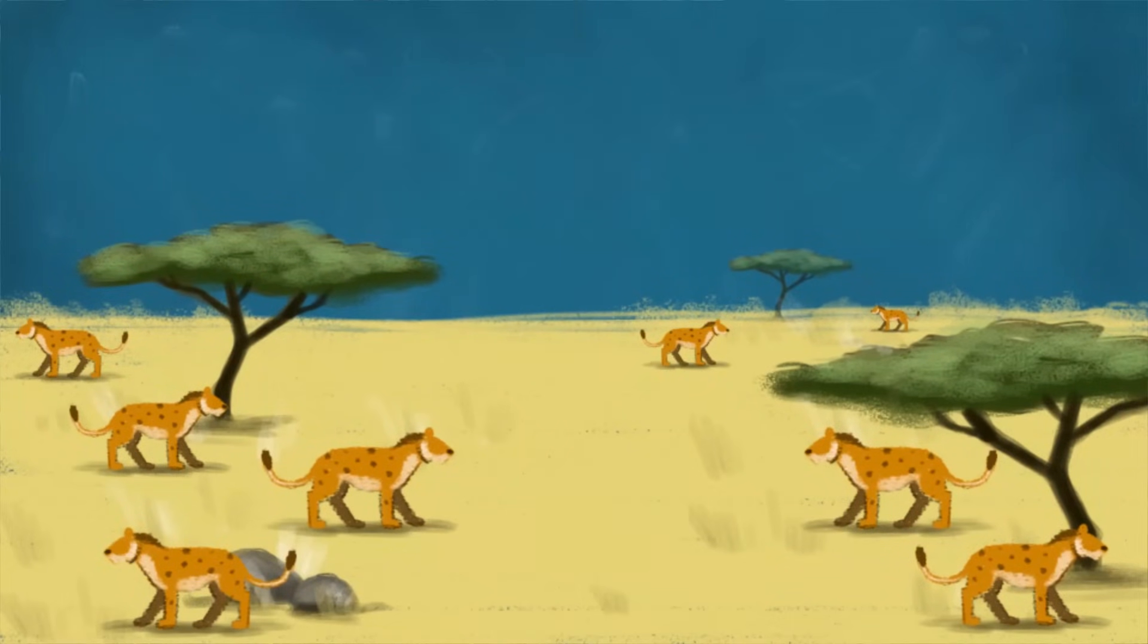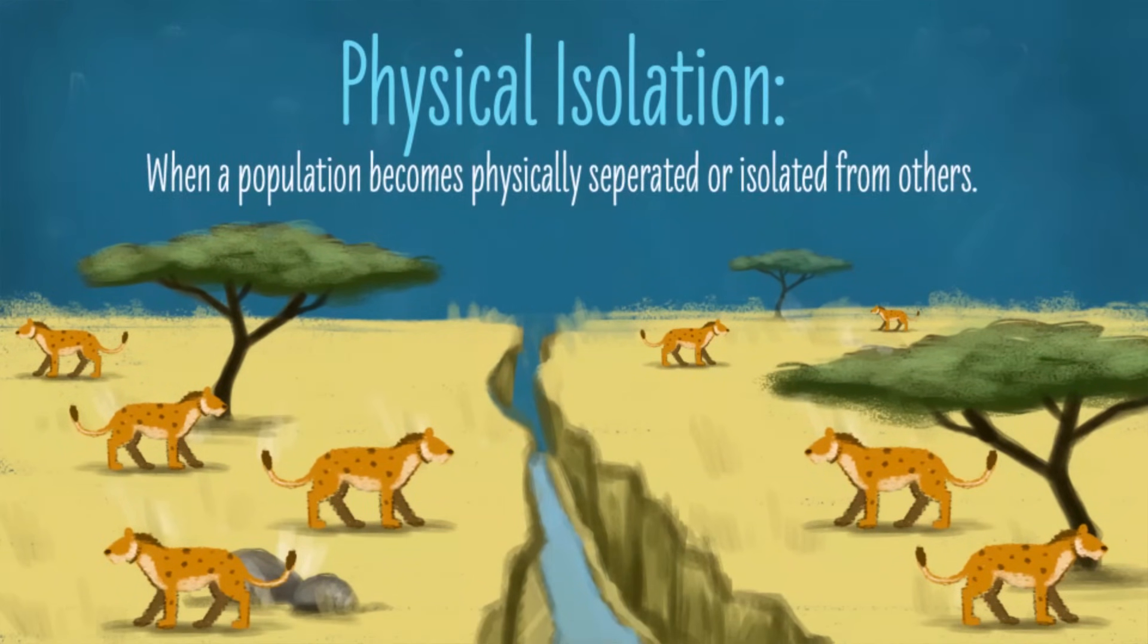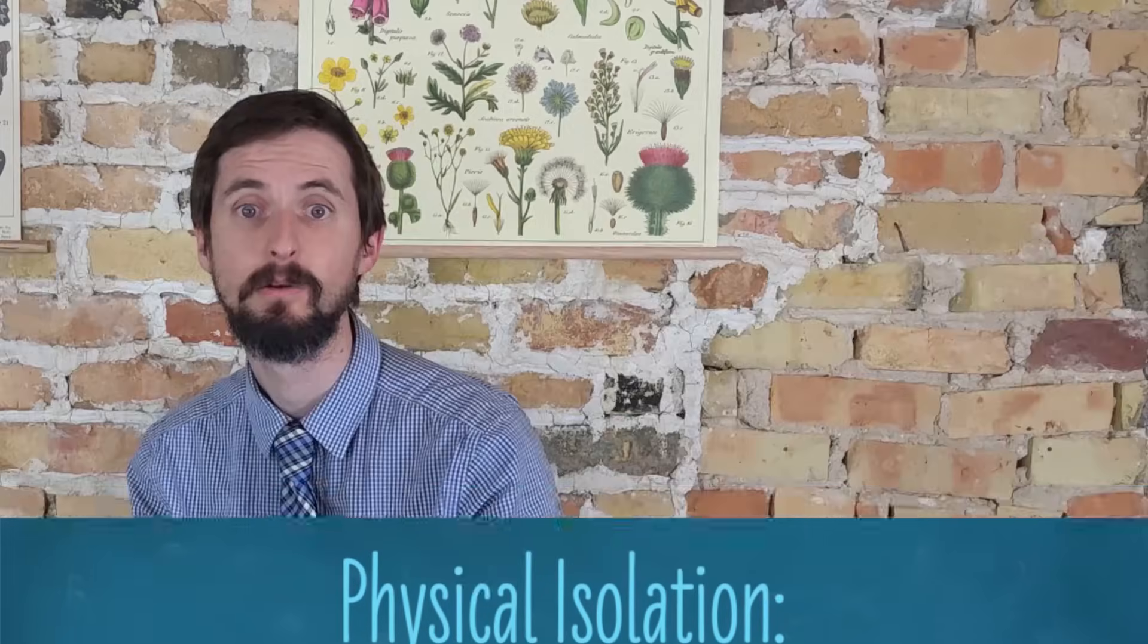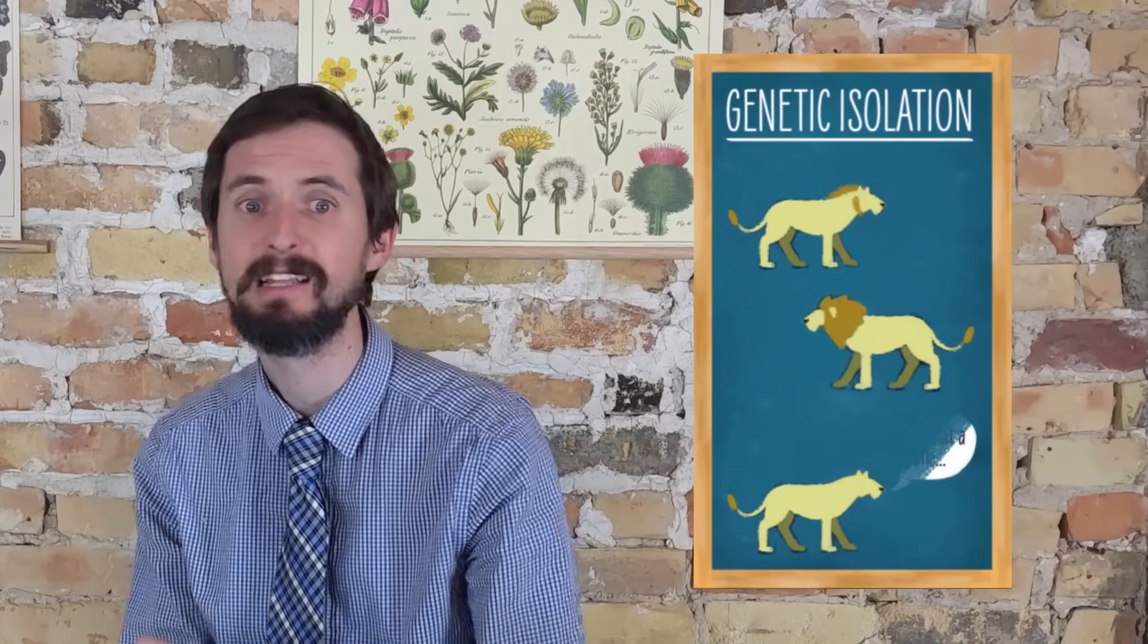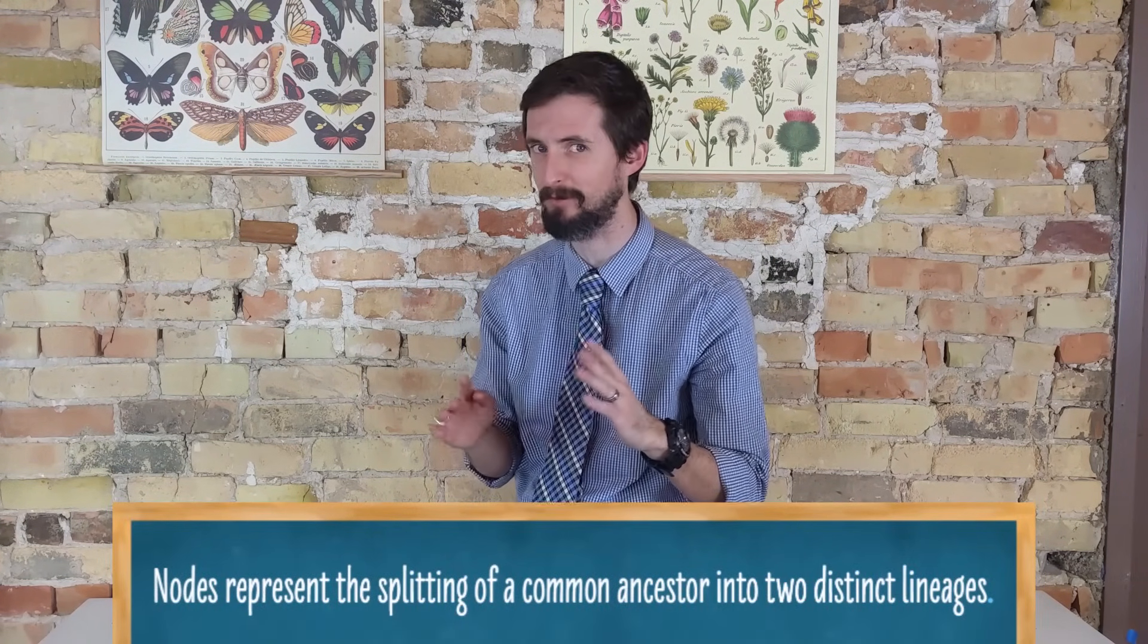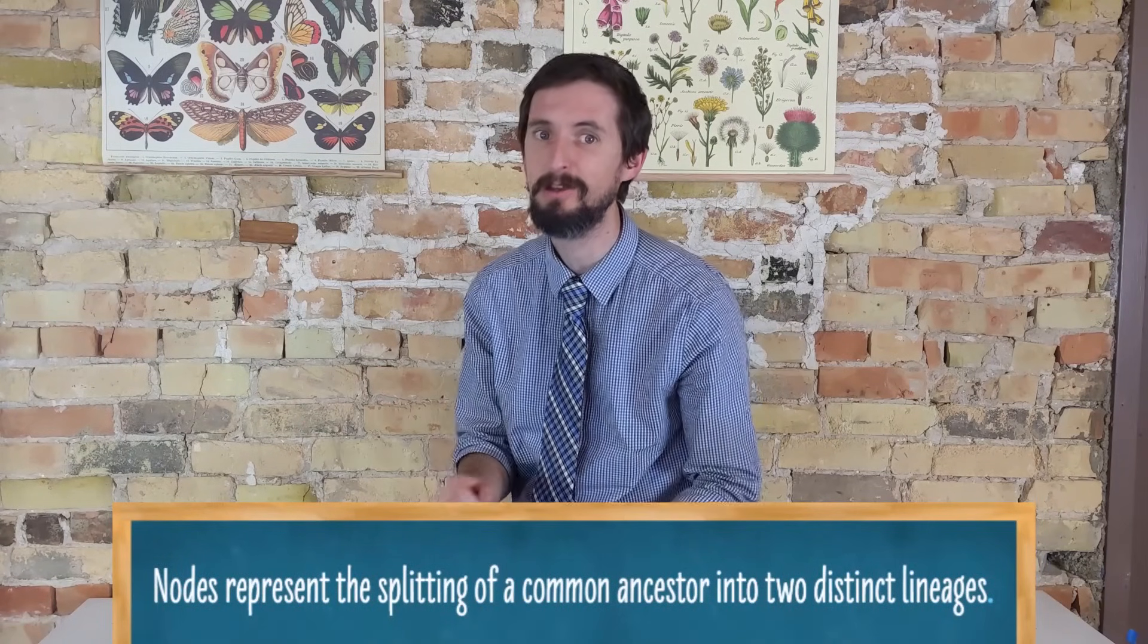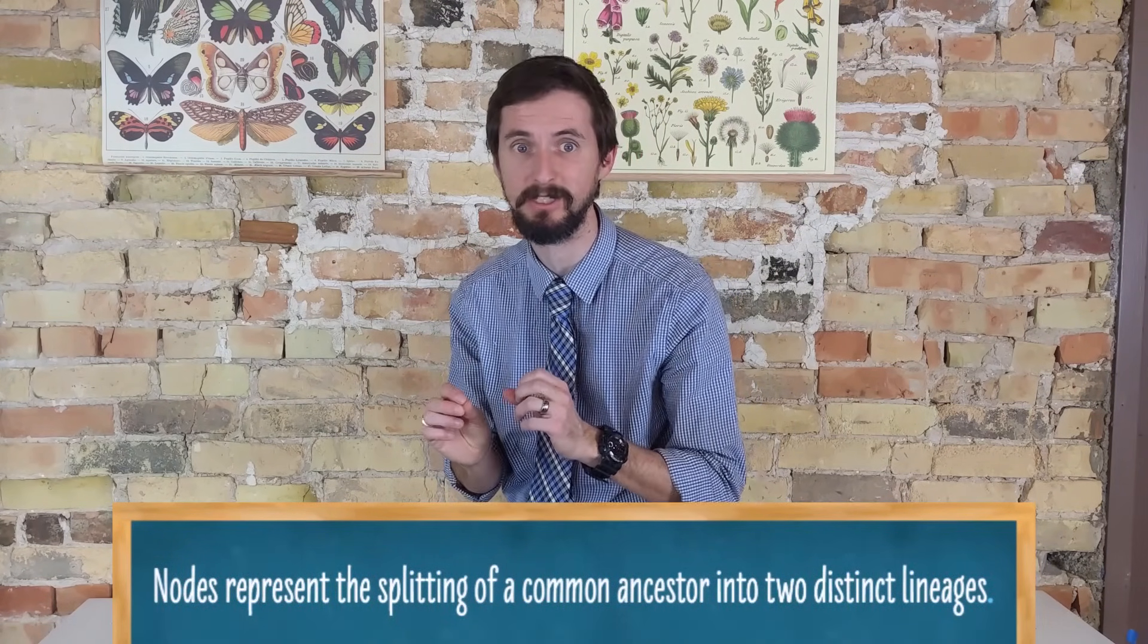This could have happened because part of the population became physically isolated from the rest, or because some of them made choices like which mates they picked to isolate themselves genetically from the rest of the population. Either way, this population that was previously a single population became, after this point represented by the node, two separate populations.